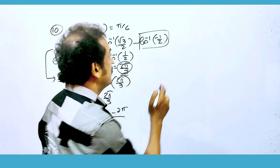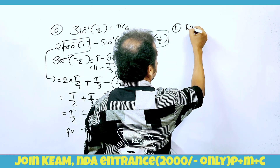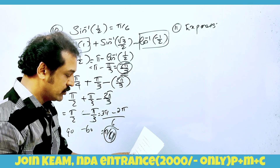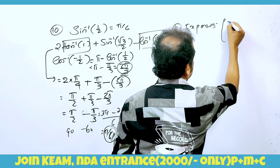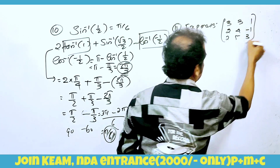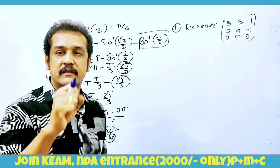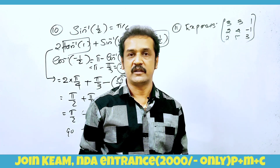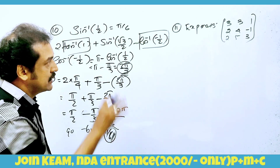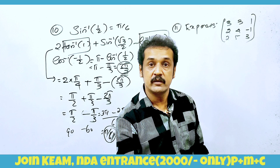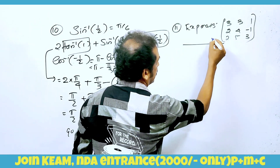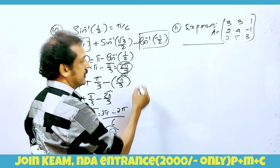The next question: express the matrix [3, 3, 1, 2, 4, -1, 2, 5, 3] as the sum of a symmetric and skew-symmetric matrix. This is a 4-mark question. We have two matrices to find: one symmetric and one skew-symmetric.